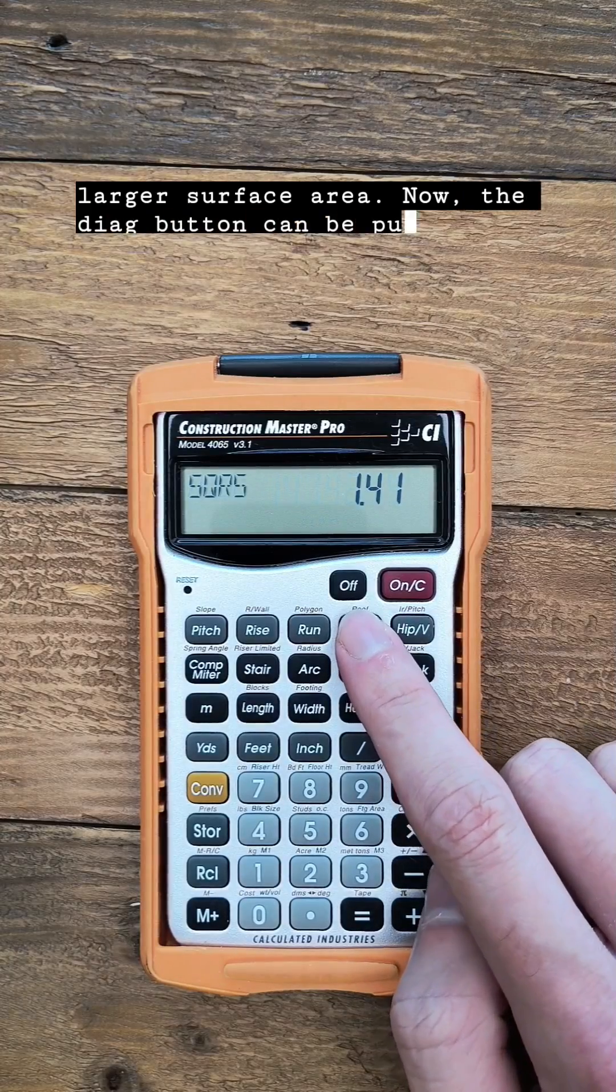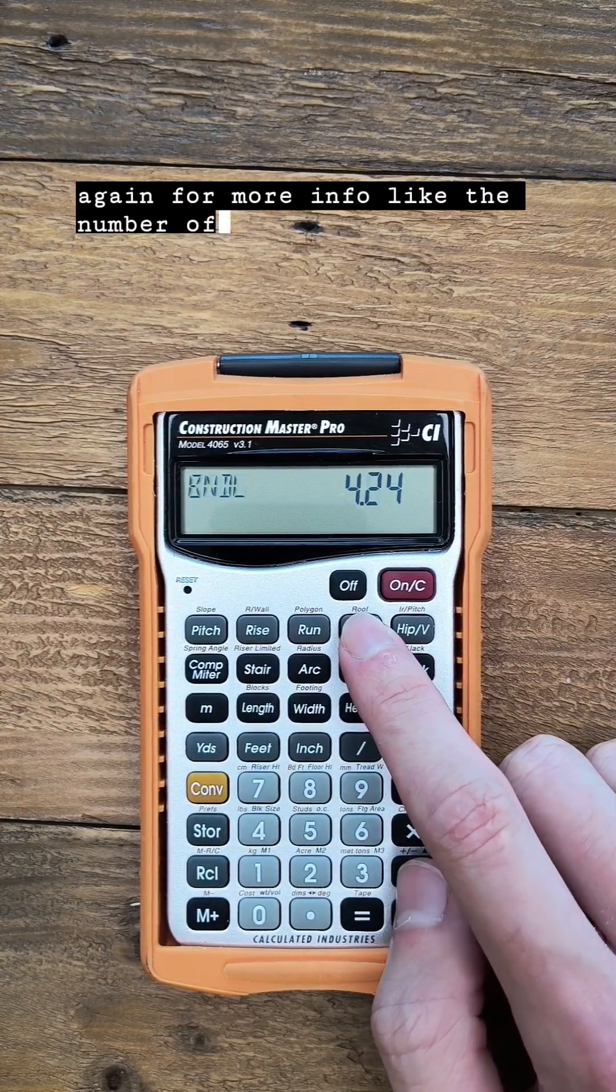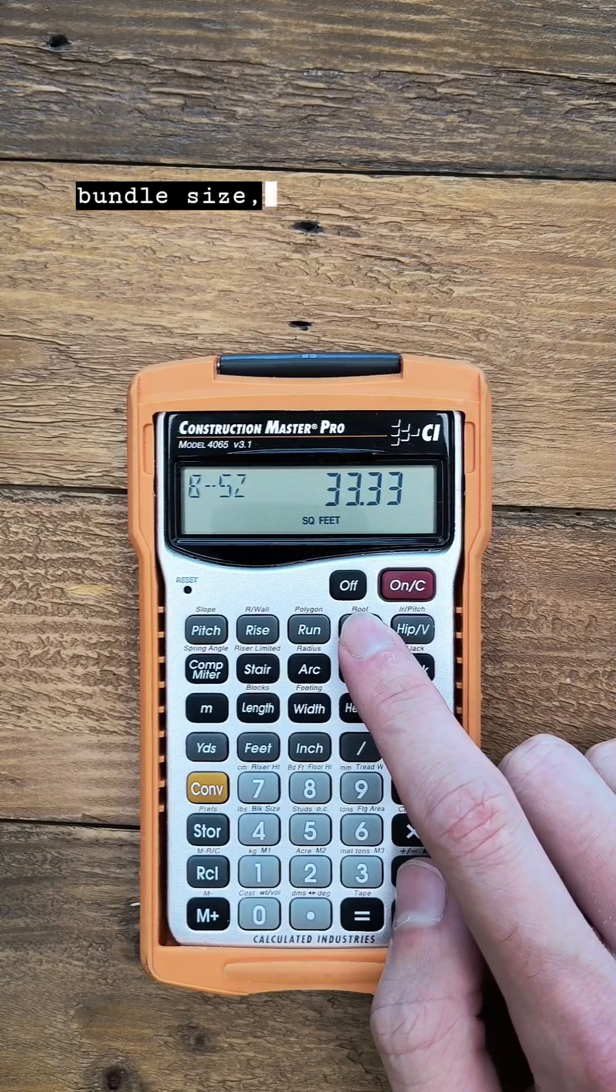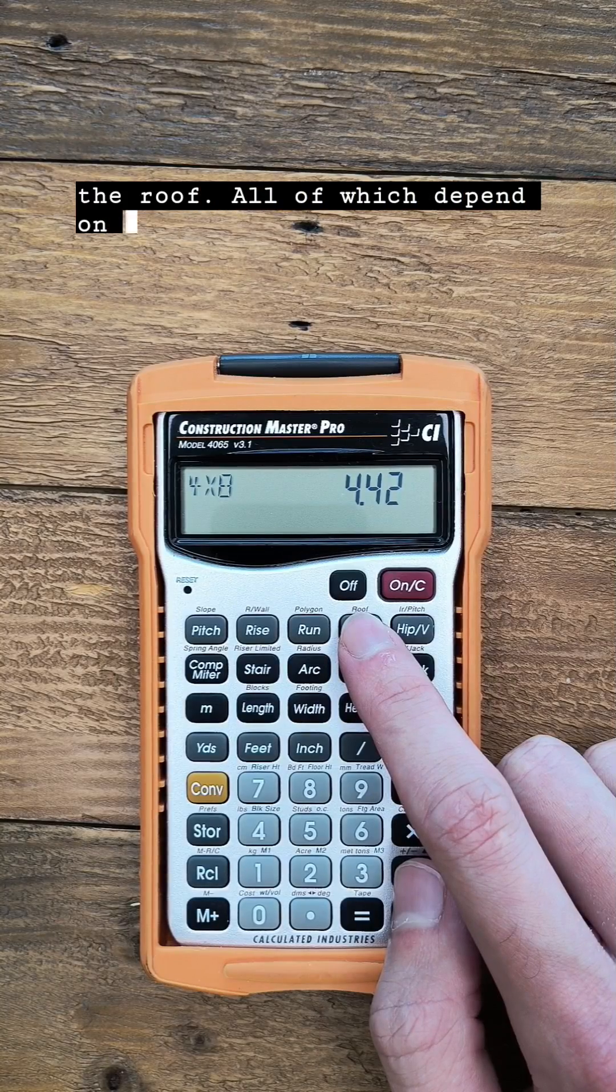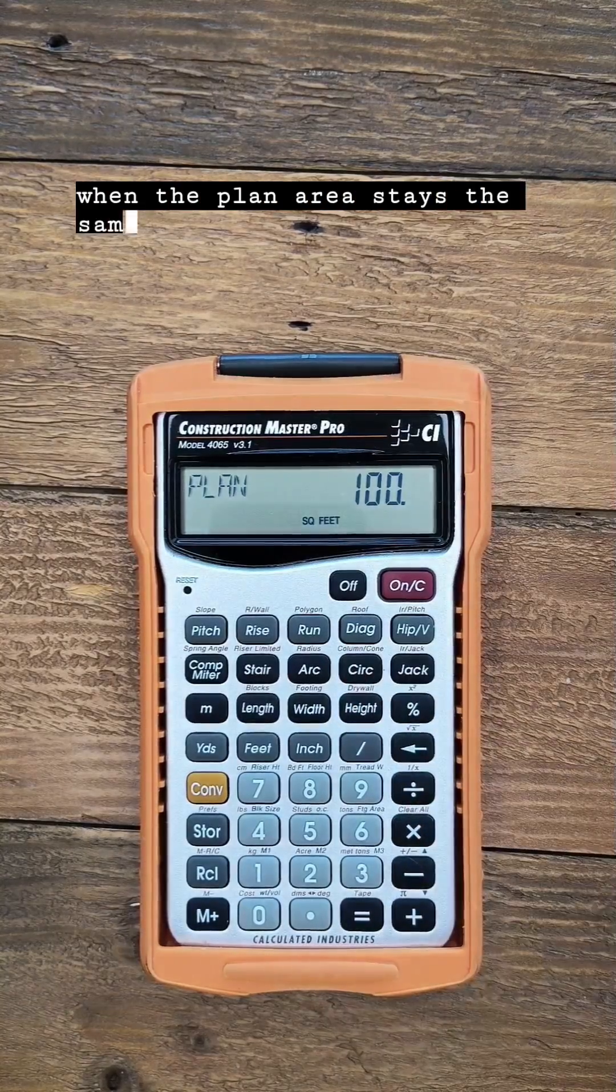Now the diag button can be pushed again for more info like the number of squares, bundles, bundle size, and 4x8 sheets needed to cover the roof. All of which depend on the pitch of the roof, even when the plan area stays the same.